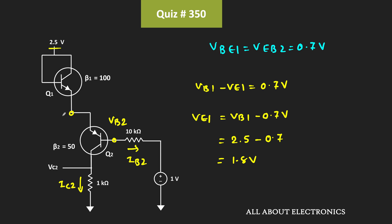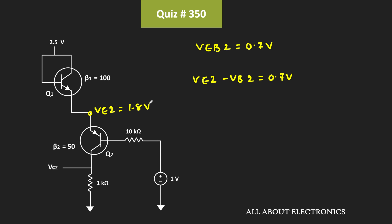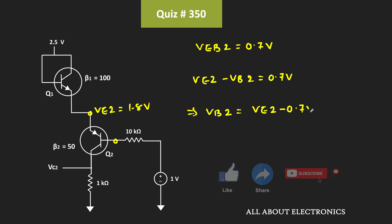Since the emitters of both transistors are connected together, we can say that VE1 is equal to VE2, which is equal to 1.8V. And we have been given that VEB2 is equal to 0.7V, meaning the difference between VE2 and VB2 is equal to 0.7V. We already know the value of VE2, which is 1.8V.